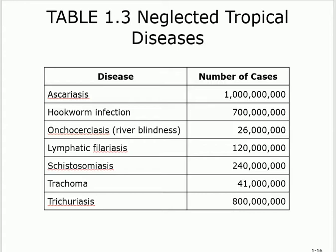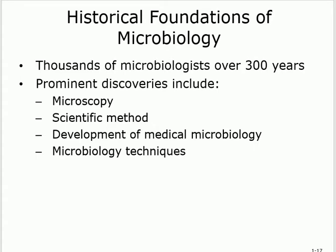Neglected tropical diseases are diseases found especially in tropical areas and less-developed countries that don't receive much attention. Examples include ascariasis, hookworm, lymphatic filariasis (where a person's limbs swell to look like an elephant's due to blocked lymphatics), schistosomiasis, and trachoma. These are just diseases to be aware of.